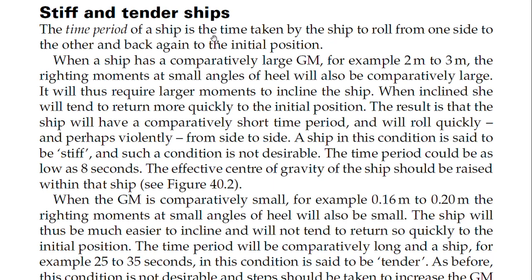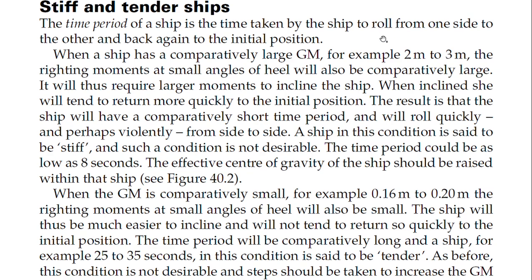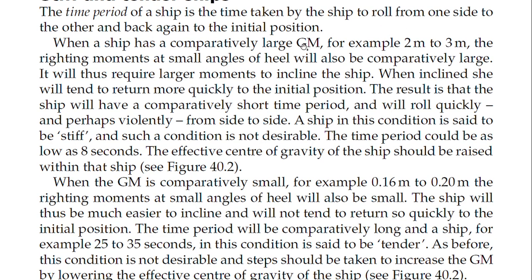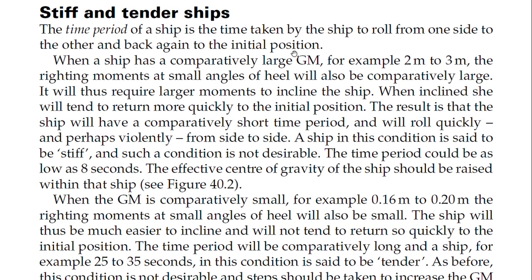The time period for a ship is the time taken by the ship to roll from one side to the other and back again to the initial position. So the ship goes from port to starboard and then back again to the neutral middle position — the total time taken for that complete cycle is known as the time period.